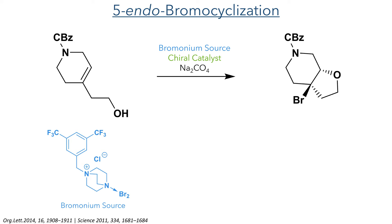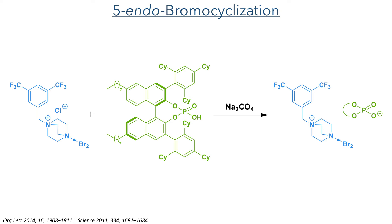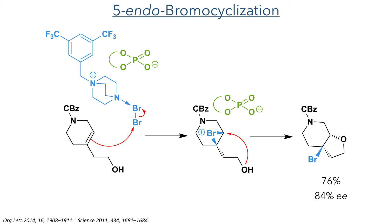While this reaction was not carried out using phase transfer conditions, the bromonium source used contains features of a molecule used under such conditions. It has a hydrophilic quaternary ammonium salt fragment coordinated to dibromine and a hydrophobic aromatic fragment. The catalyst used to control enantioselectivity was a BINAP-derived phosphoric acid containing bulky aromatic rings with cyclohexyl substituents, creating a sterically hindered chiral environment. Reaction of this catalyst with the bromonium source creates the active brominating complex, which reacts with the double bond to form a bromonium intermediate. The alcohol then acts as a nucleophile in an intramolecular reaction to attack this three-membered ring, forming the target compound in 76% yield with 84% enantiomeric excess.